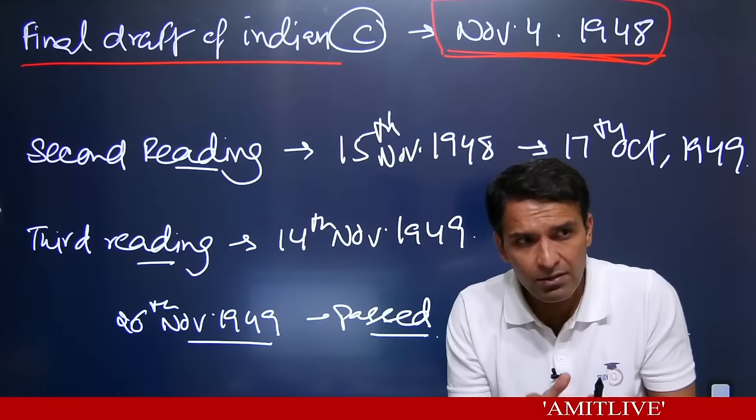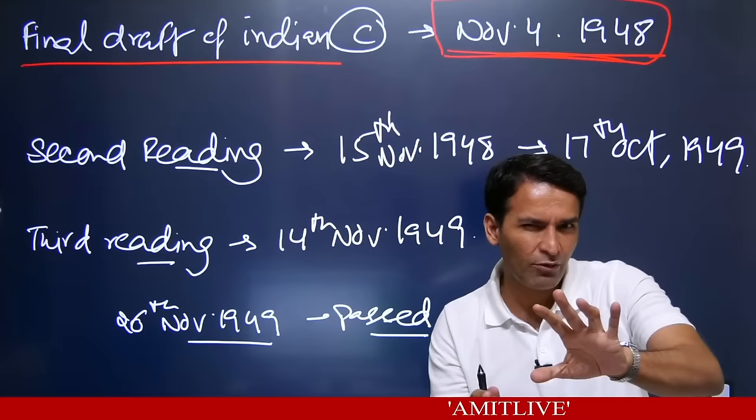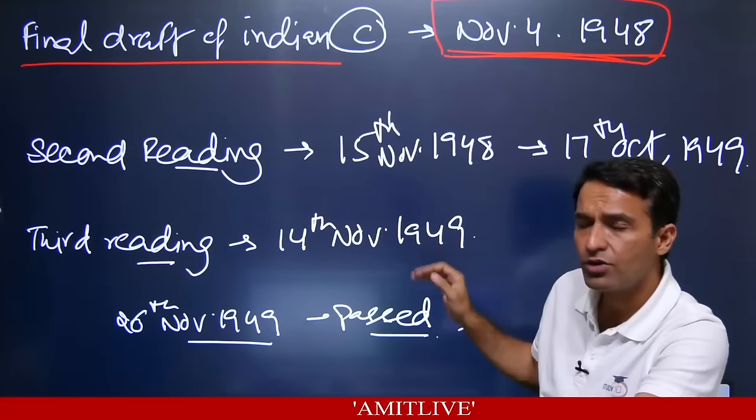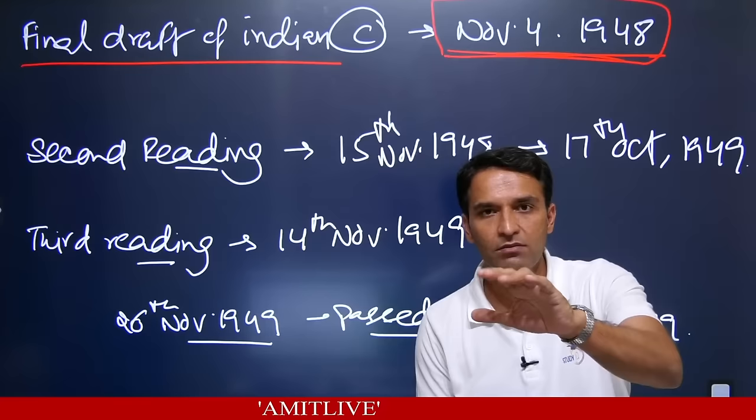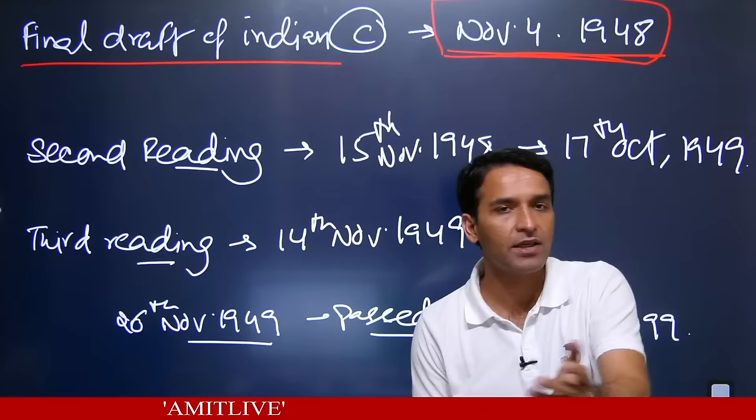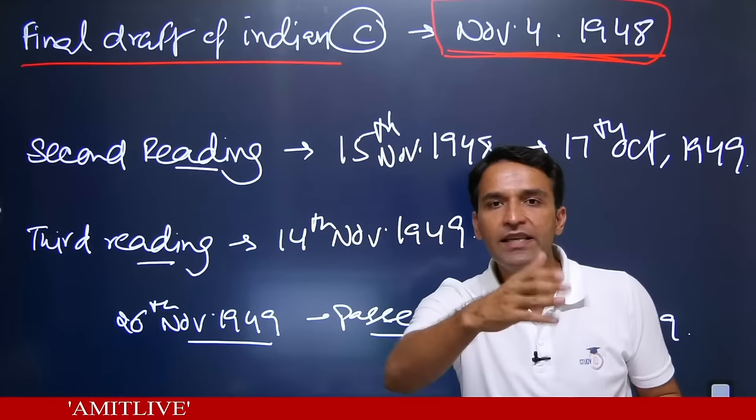First reading of the constitution meant introducing the constitution draft — November 4, 1948. Second reading meant the Constituent Assembly discussing it in full detail, clause by clause — this started on November 15, 1948 and ran for 11 months until October 17, 1949. 7,000 amendments were proposed and at least 2,400 were discussed. Third reading started on November 14, 1949 — voting on the clauses.